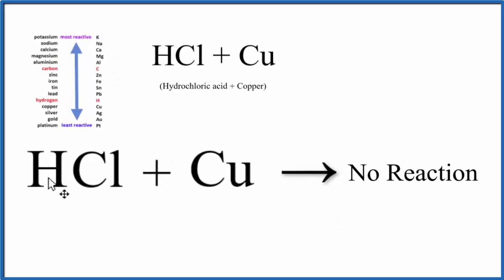If you put hydrochloric acid and copper together, nothing will happen. The activity series is helpful in determining whether a single displacement reaction will actually happen because we can look up each metal or hydrogen on the chart and tell which is more or less reactive.